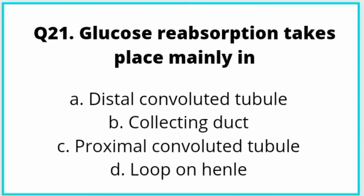Next question: Glucose reabsorption takes place mainly in which part of the nephron? The answer is option C: proximal convoluted tubule.